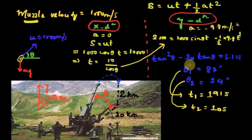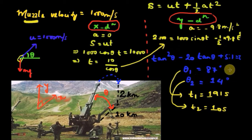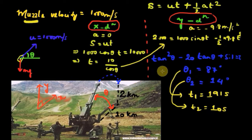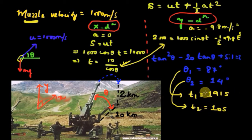After substituting and simplifying, we get the quadratic equation: tan²(theta) − 20·tan(theta) + 5.1 = 0. Solving this quadratic gives two values: theta₁ = 87° and theta₂ = 14°. Both angles would cause the shot to hit the target. Finding the corresponding times of flight, t₁ for 87° is 191 seconds and t₂ for 14° is 10 seconds. We discard theta₁ = 87° as impractical, so the barrel of the gun should be fixed at an angle of 14° from the horizontal.